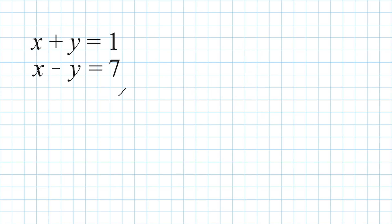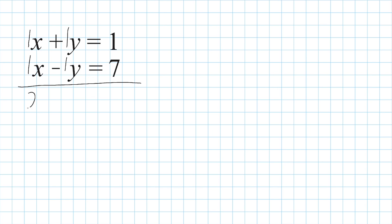This first example is rather easy because it is already set up for us to solve. If we take a look at the y terms, we have positive one y and negative one y, which means when we add these two quantities together that is going to result in zero y, eliminating the y variable. So we are going to add the two equations together, taking this 1x and this 1x and combining them.